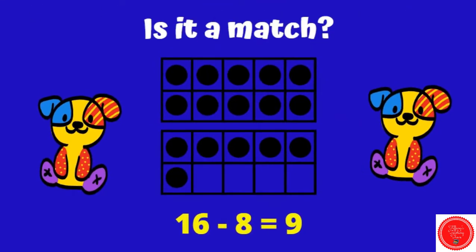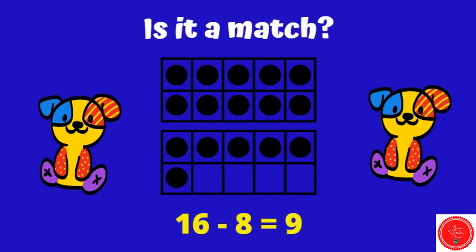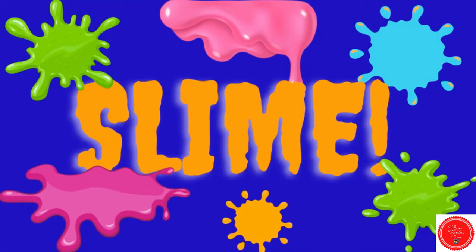16 minus 6 equals 9 — is this a match? So we have 16 altogether. How many are we going to take away? 6. Start with the 10 frame that is not complete: 1, 2, 3, 4, 5, 6, 7, 8. How many are left? 1, 2, 3, 4, 5, 6, 7, 8. That does not give us 9, so this is not a match. The correct answer should be 8. We get slime.